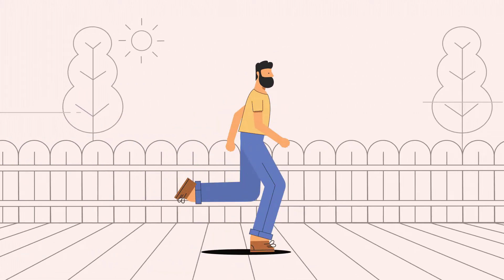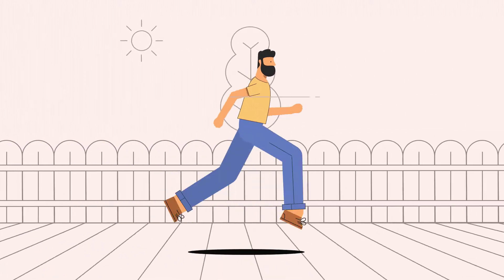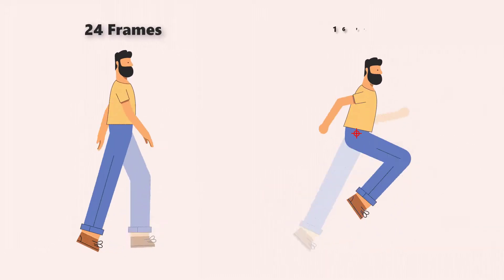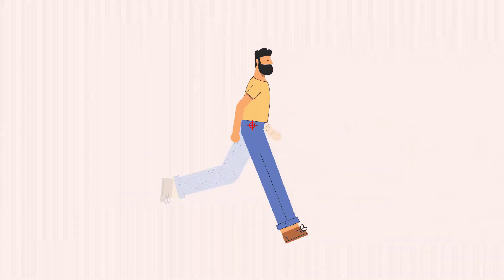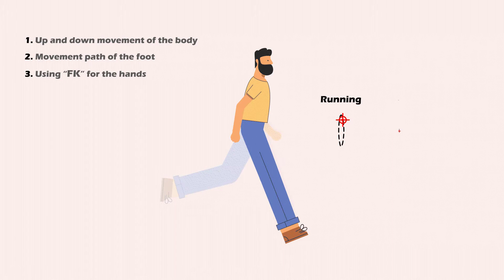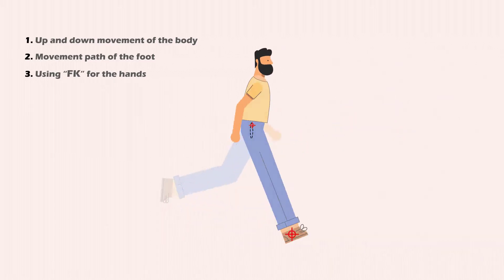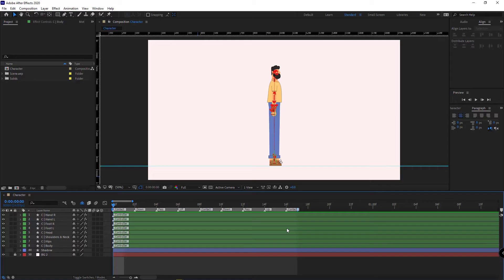In this video, I want to talk about how you can create a simple run cycle animation for your character. The run cycle is relatively faster than the walk cycle, so I'm going to create the run cycle animation in 16 frames. I'm going to apply the same three principles I worked on for the walk cycle. However, in the run cycle, the up and down movement of the body is much more and also faster, and the movement path of the foot controller is different.